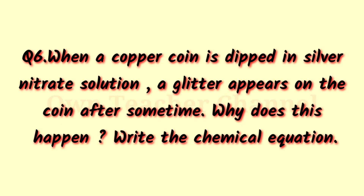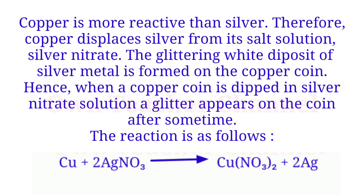Question 6: When a copper coin is dipped in silver nitrate solution, a glitter appears on the coin after some time. Why does this happen? Write the chemical equation. Copper is more reactive than silver. Therefore, copper displaces silver from its salt solution, silver nitrate. A glittering white deposit of silver metal is formed on the copper coin. Hence, when a copper coin is dipped in silver nitrate solution, a glitter appears on the coin.